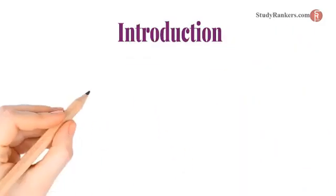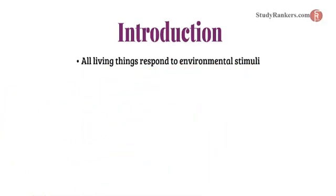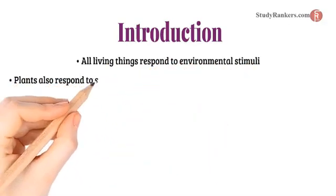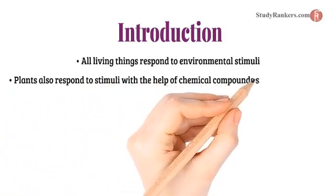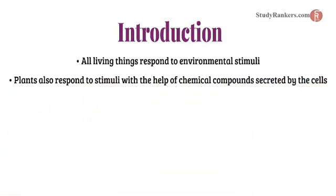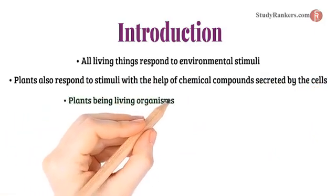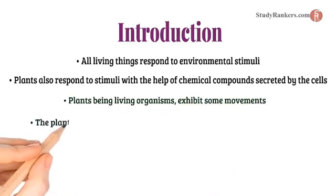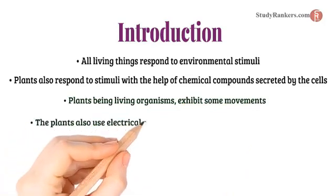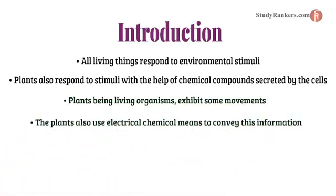Introduction. All living things respond to environmental stimuli. Plants also respond to stimuli with the help of chemical compounds secreted by the cells. Living organisms exhibit some movement. Plants also use electrochemical means to convey this information from cell to cell.